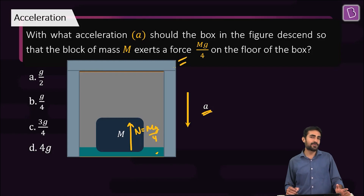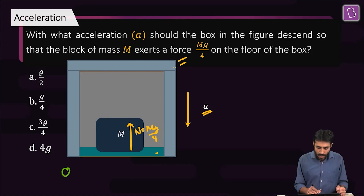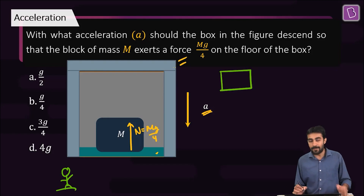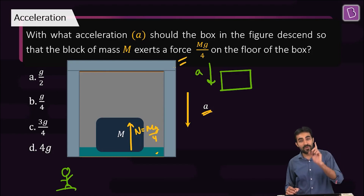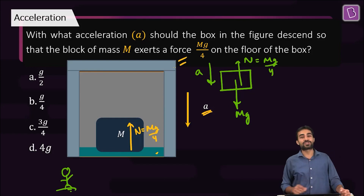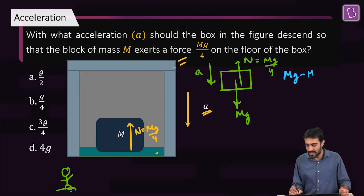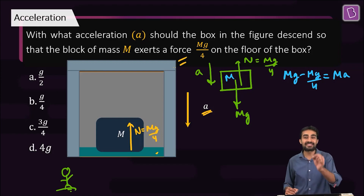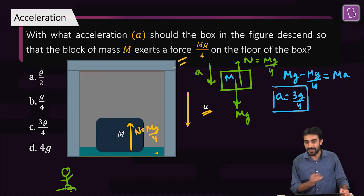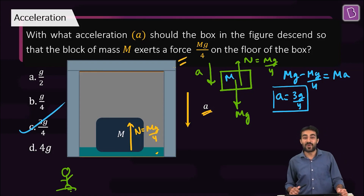Viewing this in the ground frame of reference: the block has acceleration A downward. There is mg downward and a normal reaction upward equal to mg/4. From Newton's second law: mg minus mg/4 equals ma, which gives acceleration A equal to 3g/4. Option C is the right answer.